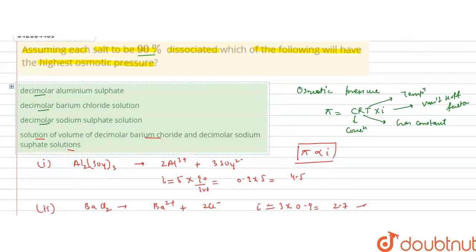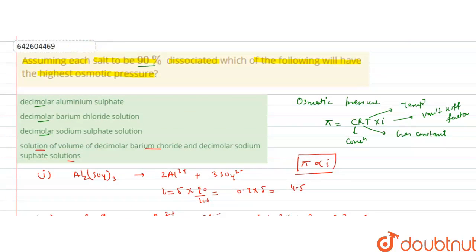The solution having the higher value of I, the van't Hoff factor, is aluminum sulfate at 4.5. Higher I means higher osmotic pressure. The answer to this question is option A: decimolar aluminum sulfate solution. I hope you understood the solution. Thank you.